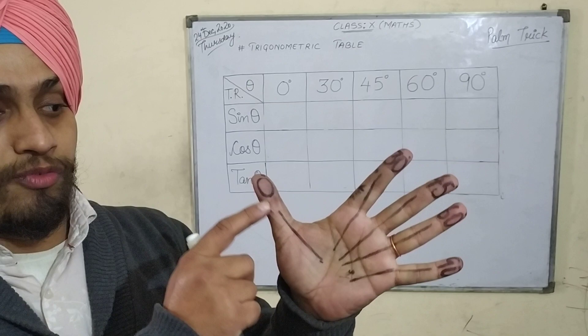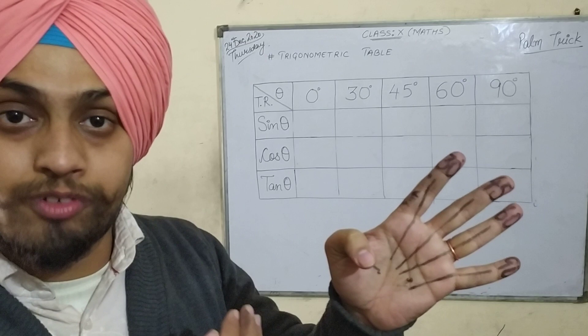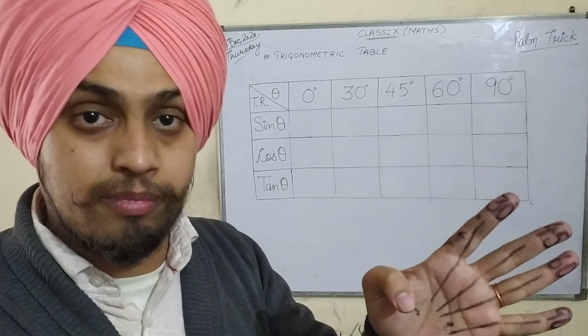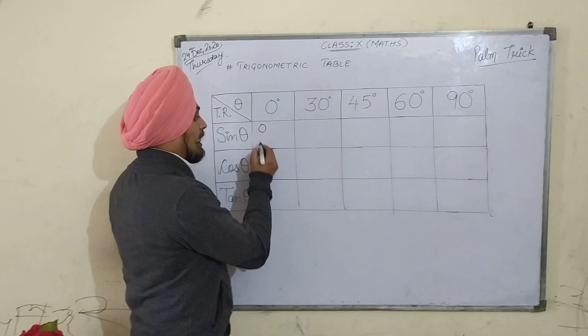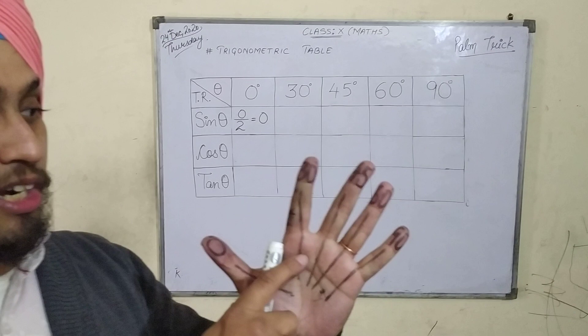Let's start with sin 0 degree. For sin 0 degree, I will bend the finger on which 0 degree is written — that is my thumb. I will bend it and see how many fingers are to the left of it. There is no finger to the left of it — 0 fingers. I will take the square root of that number, so square root of 0 is 0. I will write 0 here, and then divide it by 2. Always divide by 2. So 0 by 2, the answer will be 0.